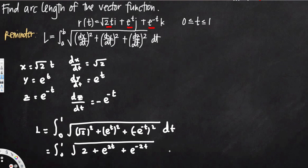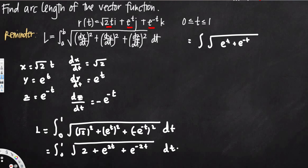Here's the tricky part. When you have sine and cosine you can use sin²+cos²=1, but when you don't have that, you have to look at whether you can factor the expression. This is not easy to see, but it is factorable. If you factor it, you get the integral of the square root of (e^t + e^(−t))².